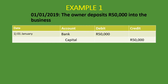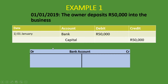Now, if you are given the owner deposits 50,000 rand into the business and you're asked to do the general ledger or T-account, here's how you go about doing it. You draw the T-account — that's why it's called the T-account, because it looks like a T. Write the name of the account on top, then put your debit on the left-hand side and your credit on the right-hand side. That will never change — debit on the left, credit on the right.